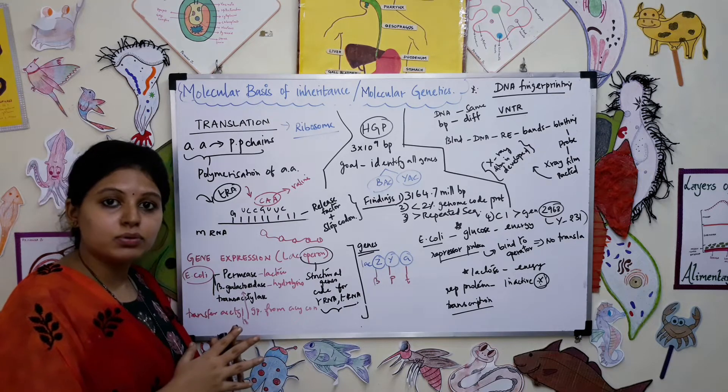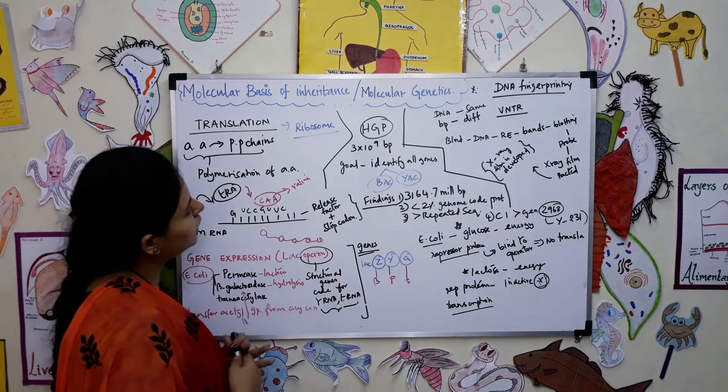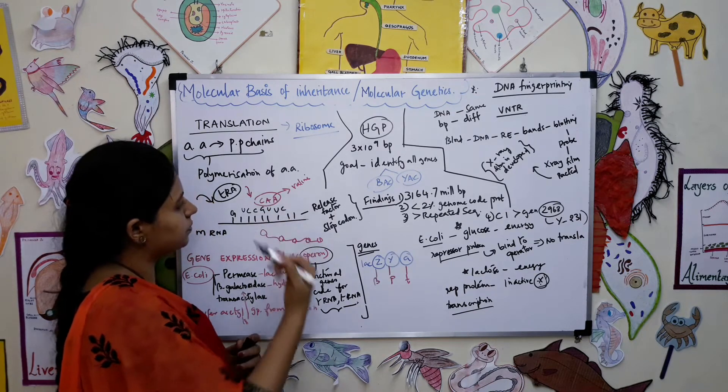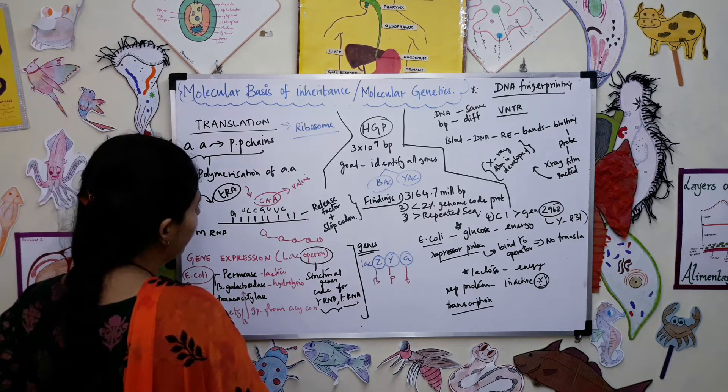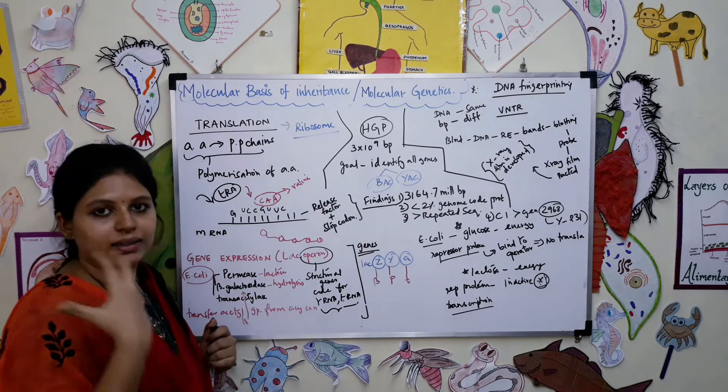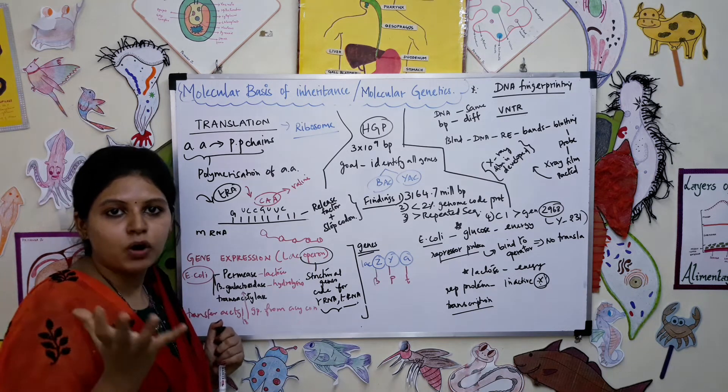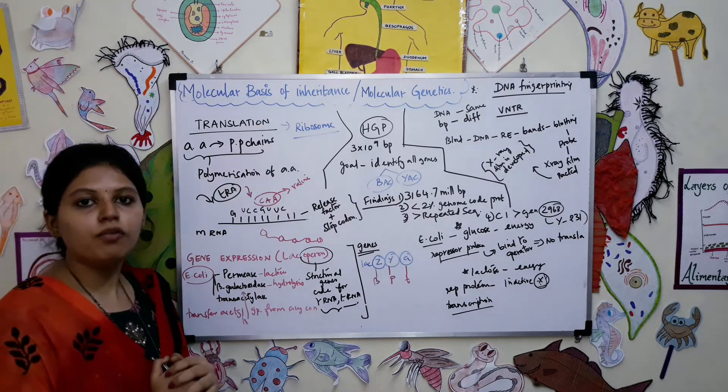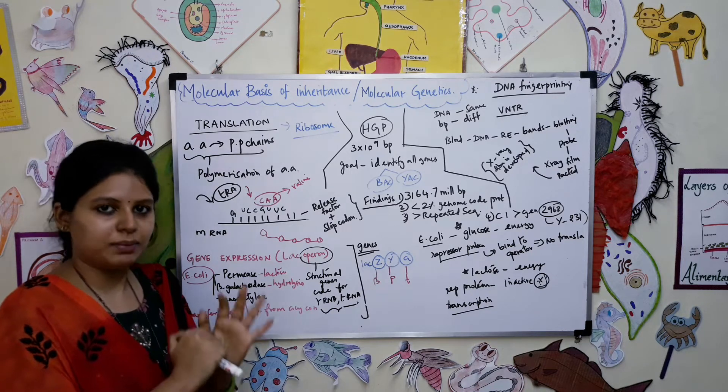For example, there is a code GUU and the complementary sequence is CAA, and this will code for valine. In the same way, methionine, tryptophan, phenylalanine and different amino acid chains will be formed. That is the process of polymerization of amino acid - a very simple concept which happens in ribosome.